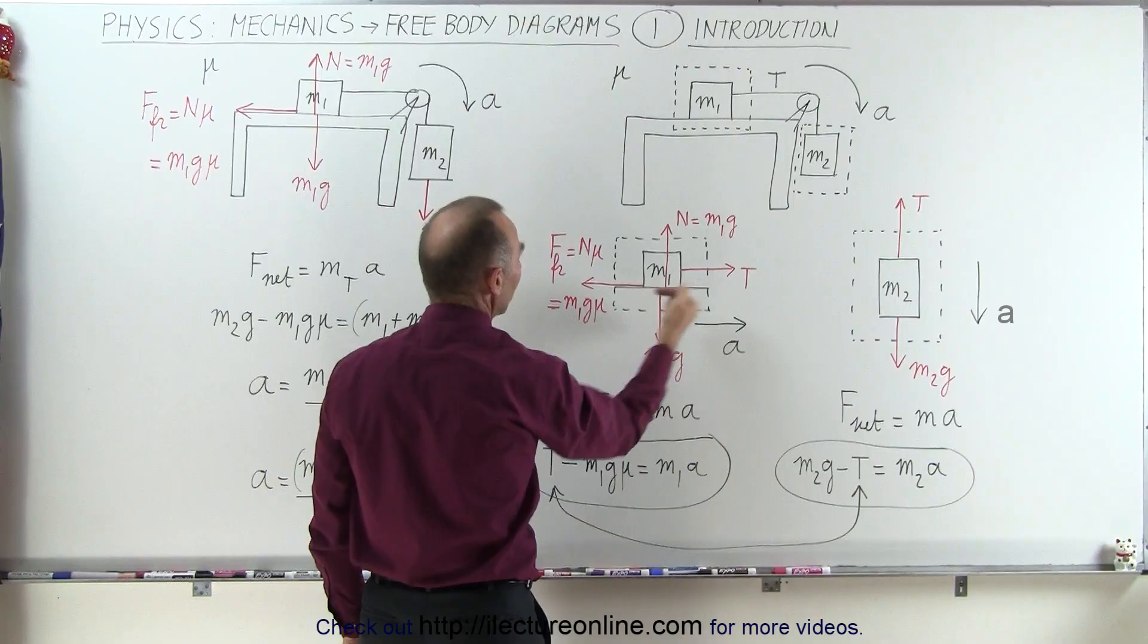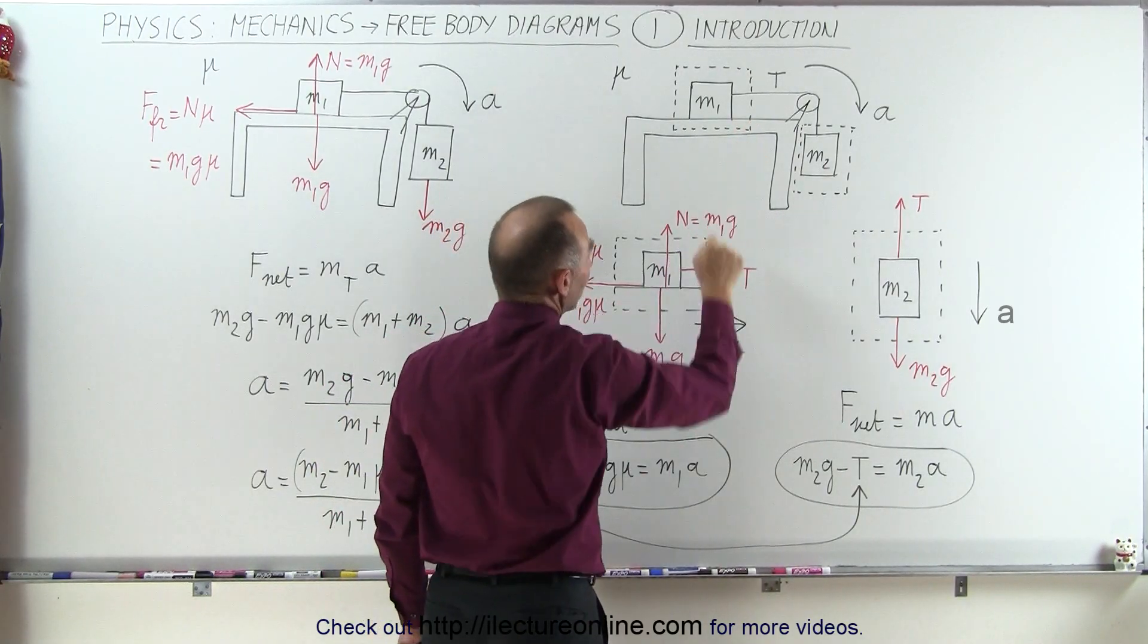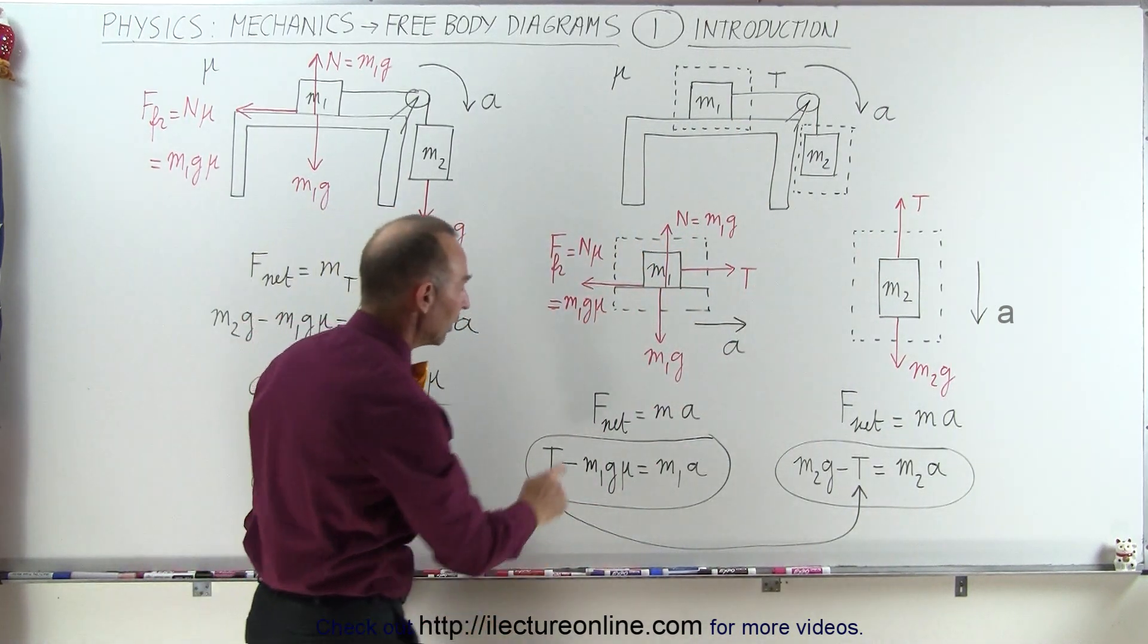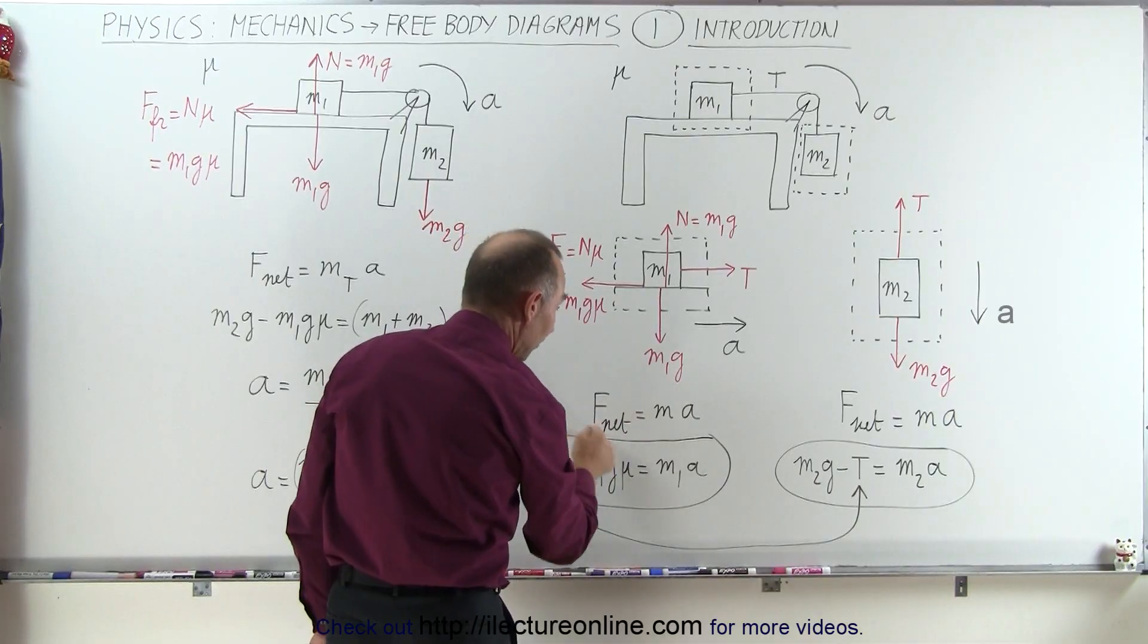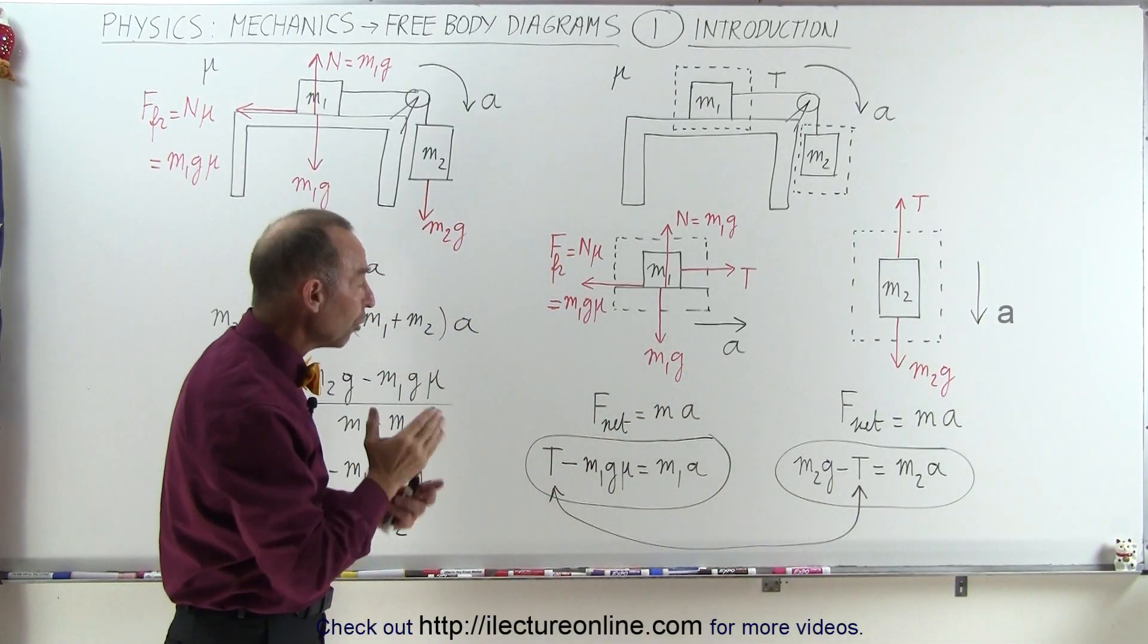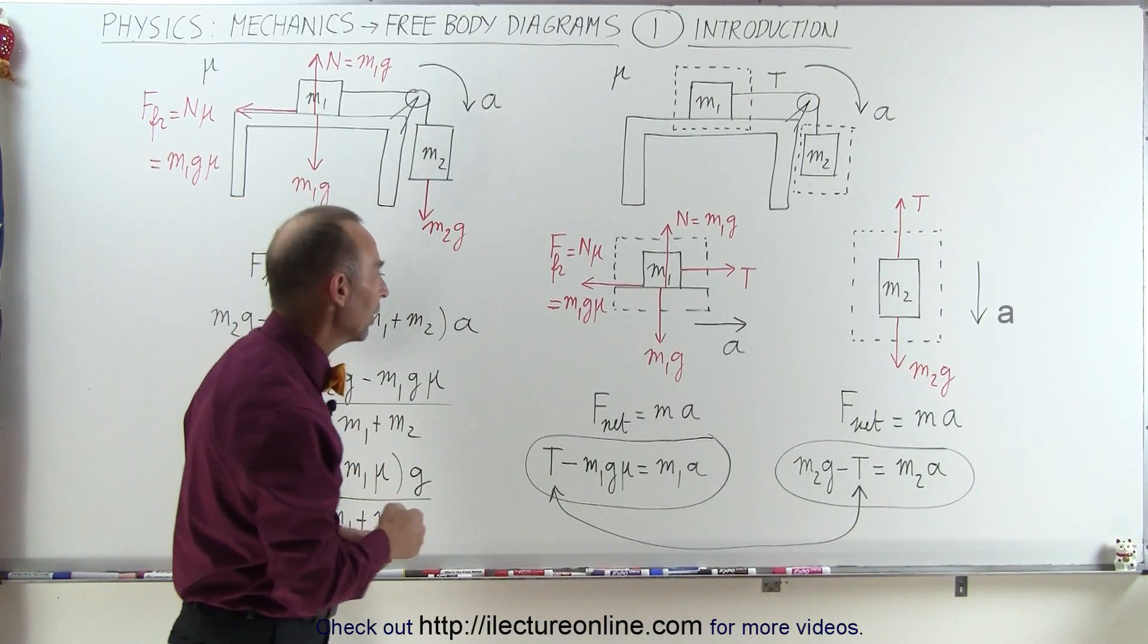And so m1g mu, the friction force, is in the opposite direction that would be a negative force, and on the right side we have the tension of the string pulling it to the right. Again we use the equation F equals ma, or specifically the net force equals ma, and the net force is always all the forces aiding the acceleration minus all the forces opposing the acceleration.